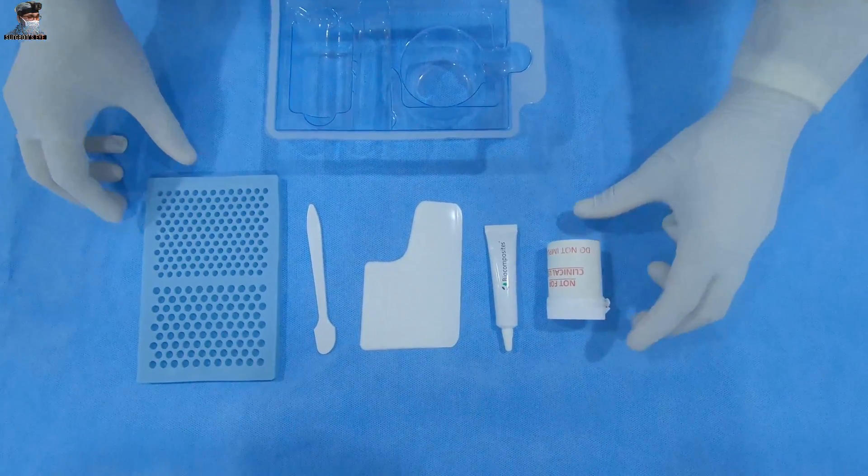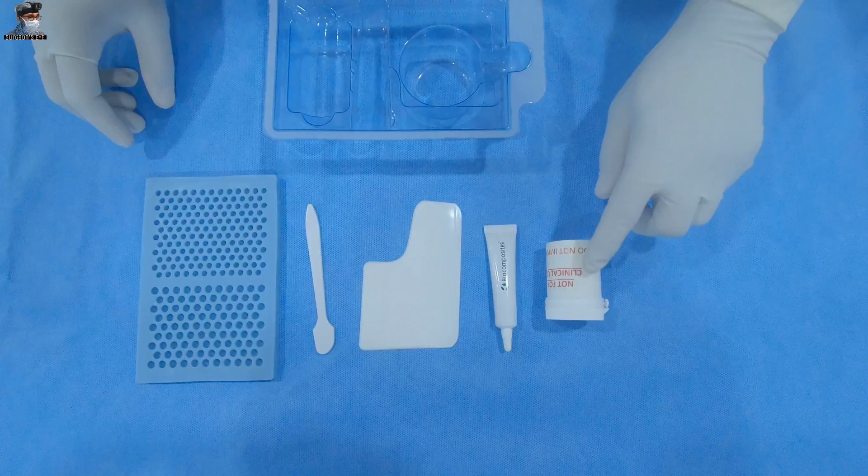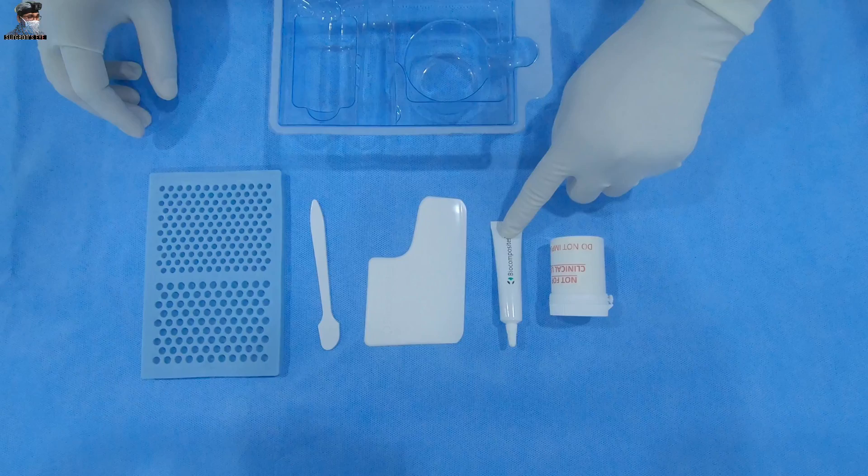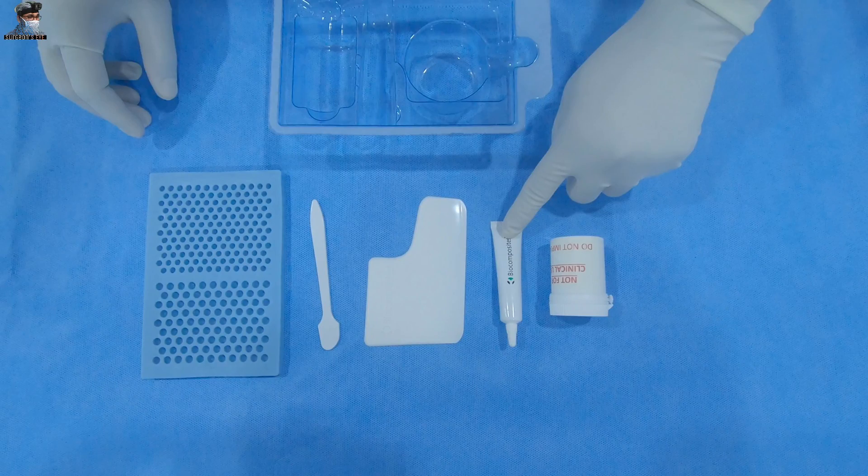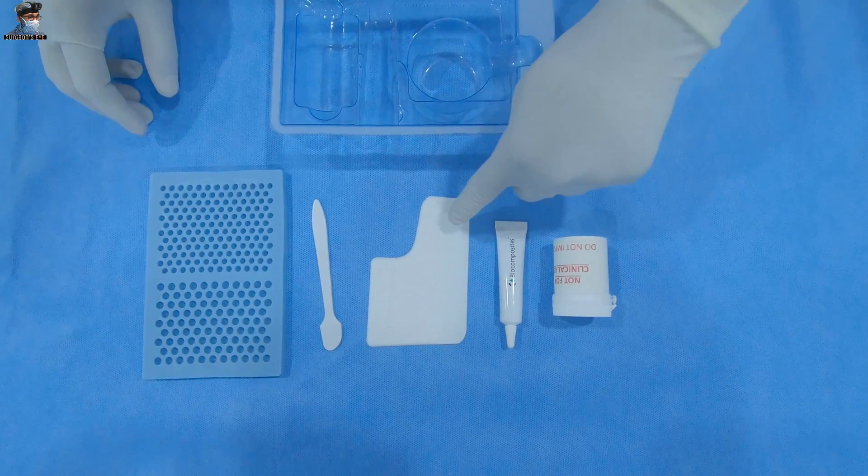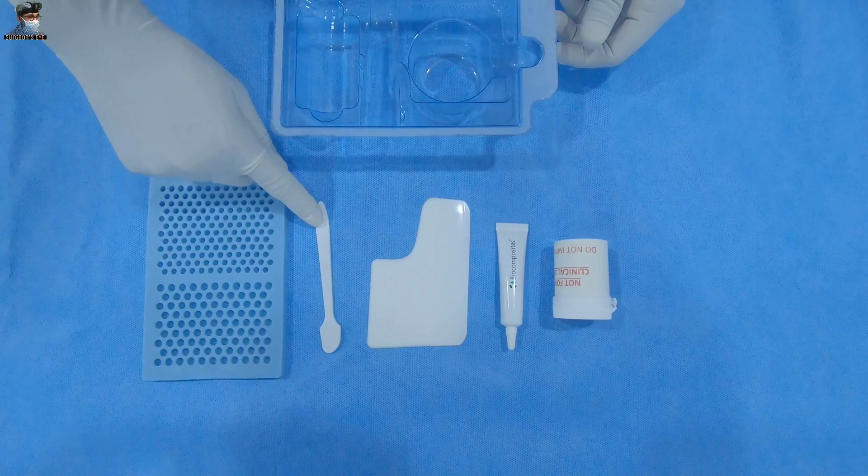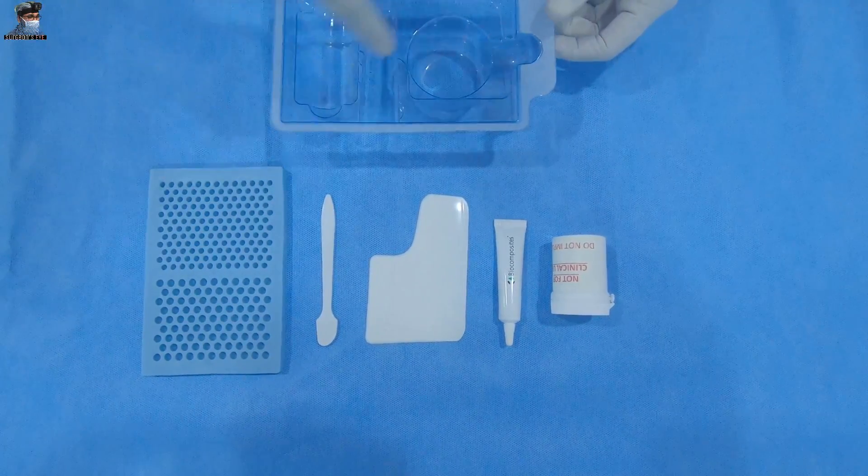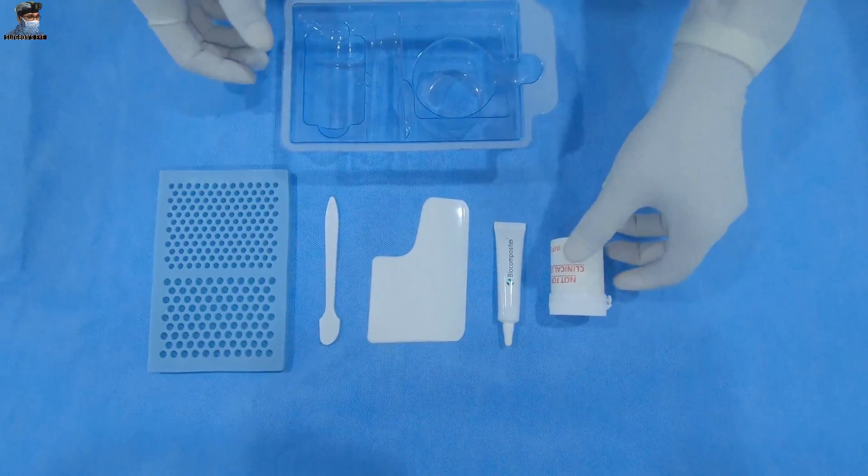The inner pack contains a pot with the Stimulan Rapid Cure powder, a tube with pre-measured mixing solution, a paste applicator, a special spatula, a bead mat, and a mixing bowl. Let's start preparing the beads.